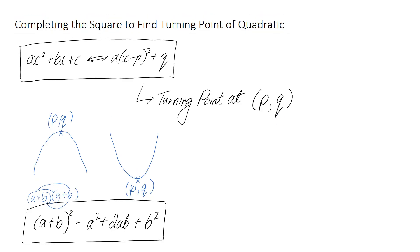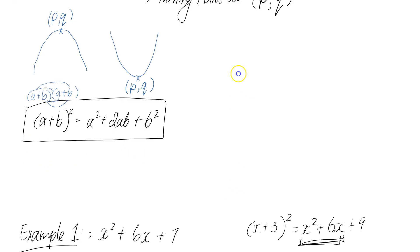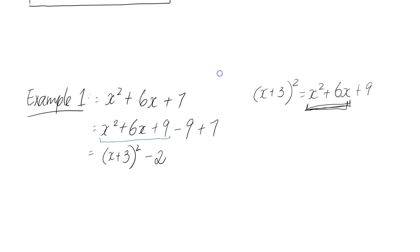What it means is this first part can now be replaced, because we know it equals x plus 3 all squared. Then we have minus 9 plus 7, which simplifies to minus 2. So now we've written this in completed square form. Scrolling up to copy that form down to what we have below, we should be able to read out the constants a, p, and q.